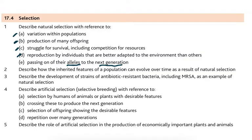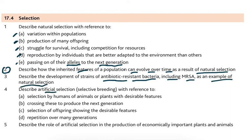Please don't say genes — it is the alleles which are passed on. Number two: describe how the inherited features of a population can evolve over time as a result of natural selection — I'll give examples including the giraffe. Then describe the development of strains of antibiotic-resistant bacteria including MRSA as an example of natural selection. Then artificial selection — selection by humans of animals or plants with desirable features for human benefit — crossing these to produce the next generation, then selection of offspring showing desirable features, then repetition over many generations.